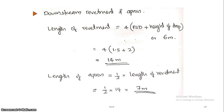So we get 14 meters. We will provide the downstream revetment for a length of 14 meters. For the length of the apron — that is, the bed pitching — it is half of 14, which is 7 meters. So we provide an apron of 7 meters.